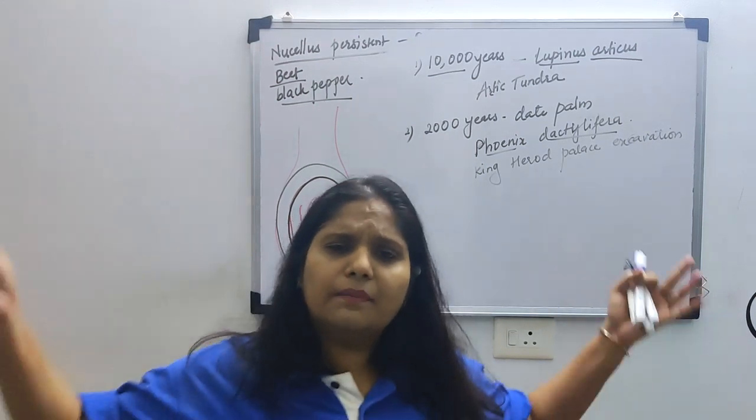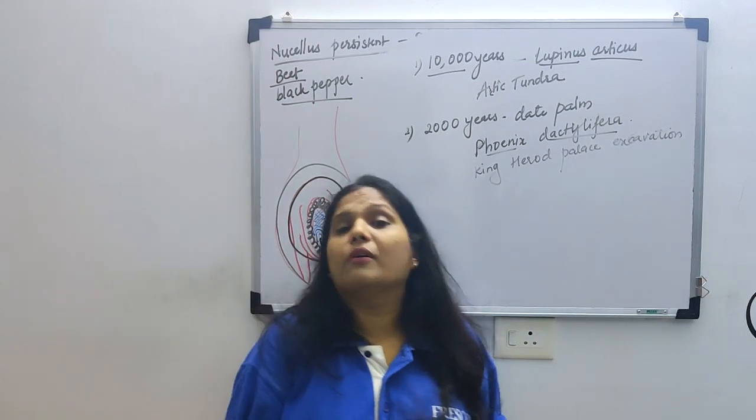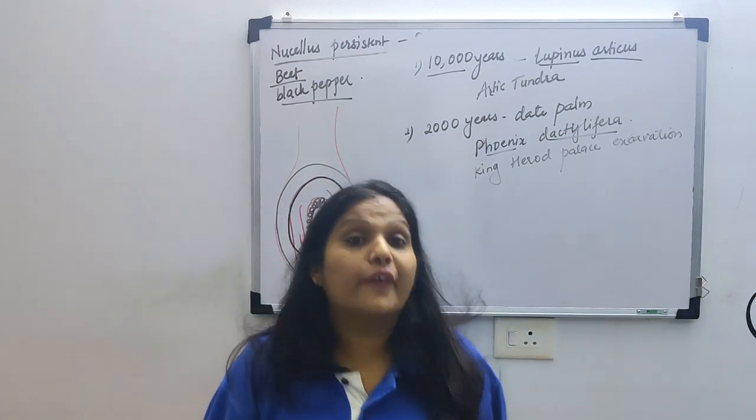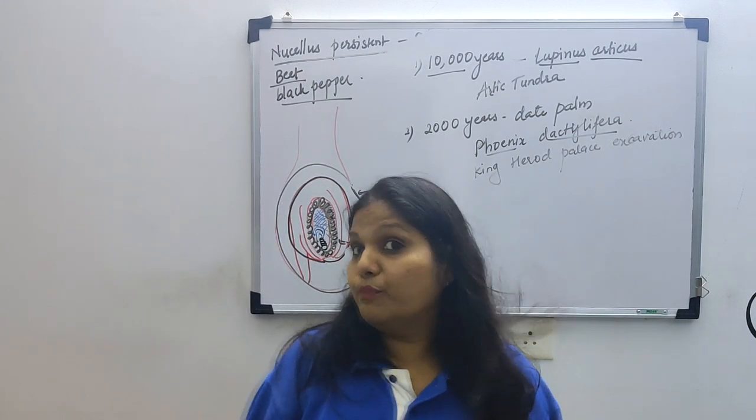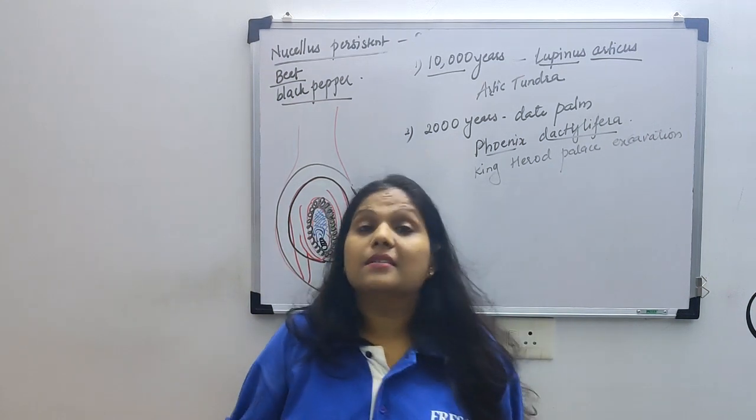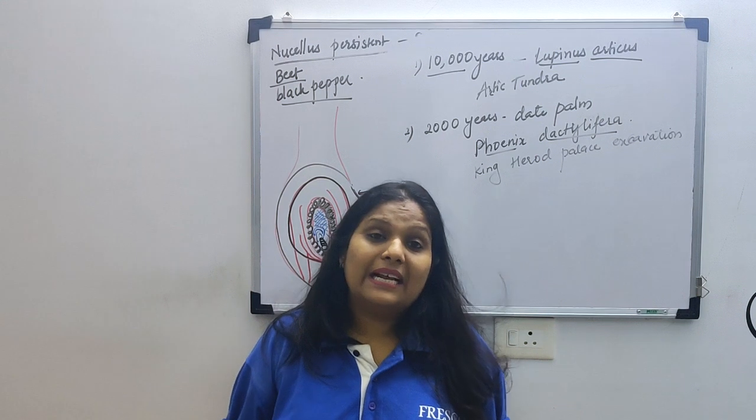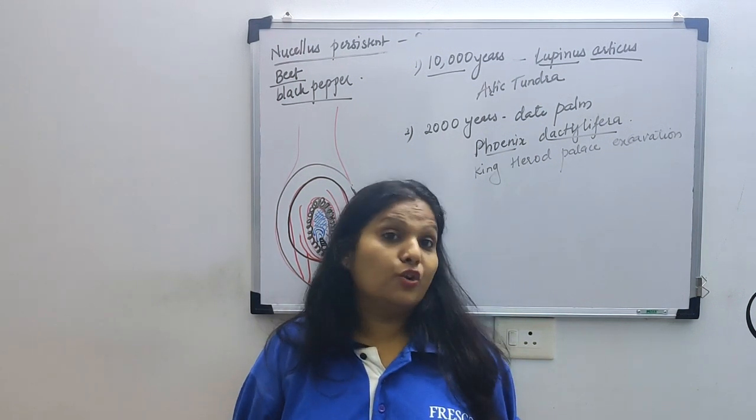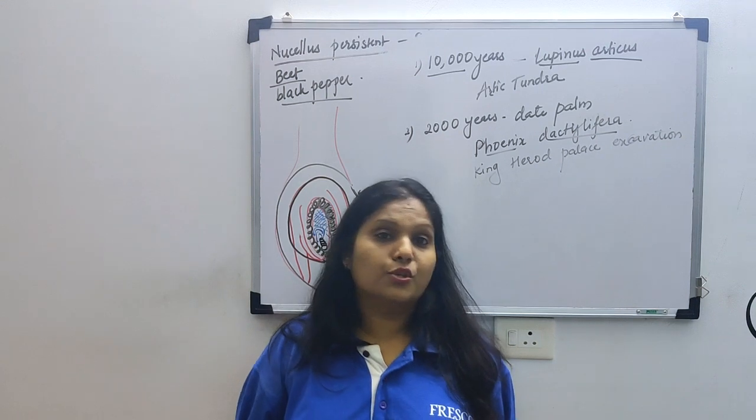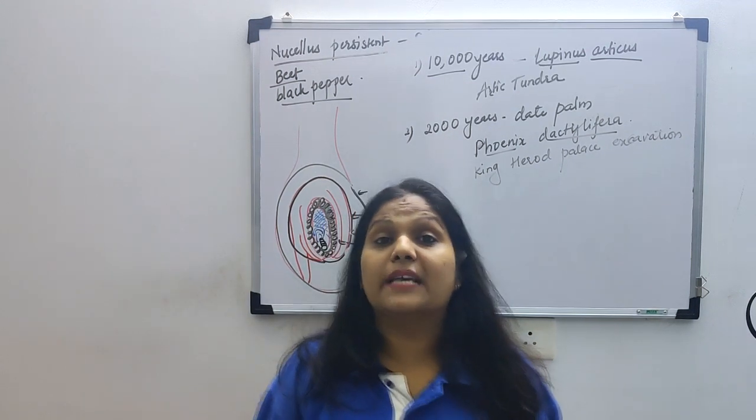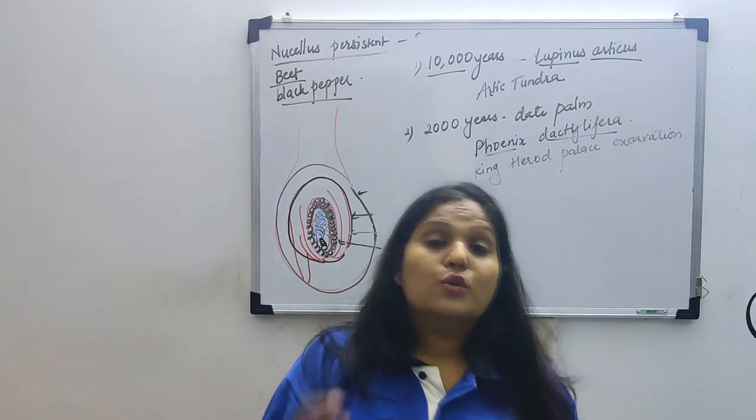Besides this, you will see some very large fruits. But in them, very small seeds are found. Like anjeer, fig. You will see fig fruit is very large, but seeds are very small. Why? So that they can be easily dispersed. Understand, every plant has made its seed size or seed dormancy such through evolution that its survival chances remain maximum.